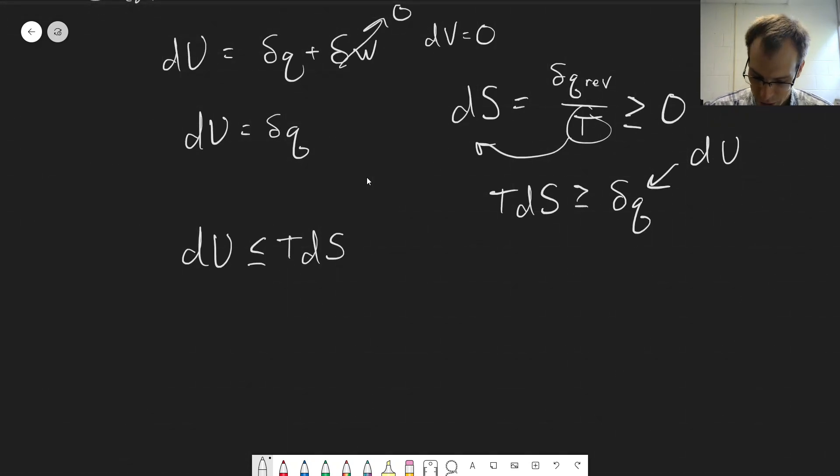One final step we can do to compare things to zero. Is it positive or negative? We can subtract TdS from both sides here, and we get an expression here, dU minus TdS, not is equal to, but is less than or equal to zero.